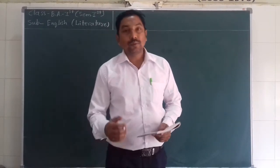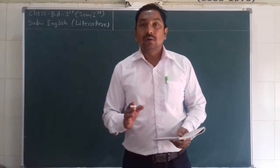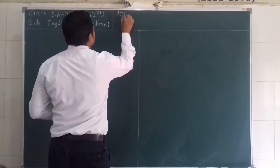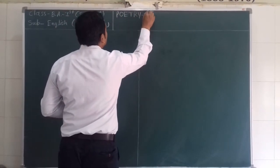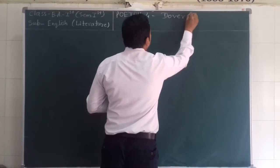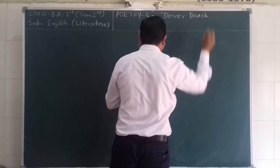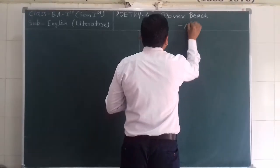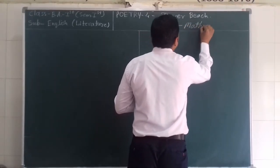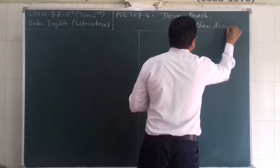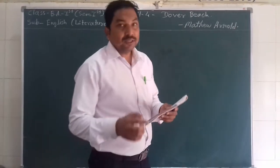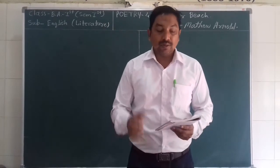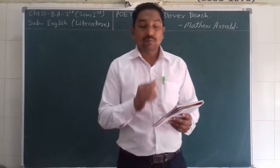Hello students, today we are going to start our fourth poem, and that is Dover Beach. This poem is written by Matthew Arnold. In this part we are going to learn the summary of this poem. Page number 19 — on this page, the first paragraph of the summary of the fourth poem.